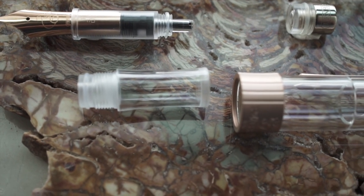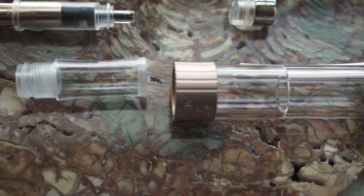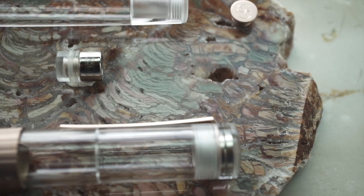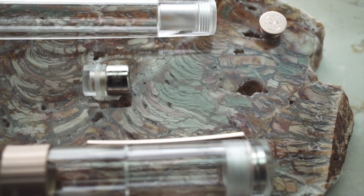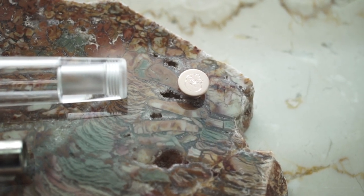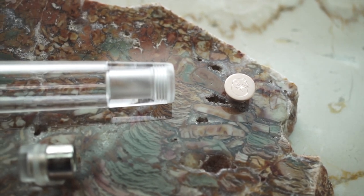Here is the pen disassembled, the nib unit, the section, the cap, the piston attached to its own magnet, the end cap, and then the barrel.